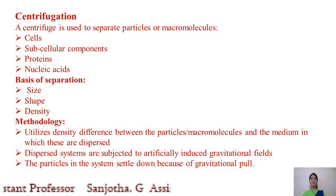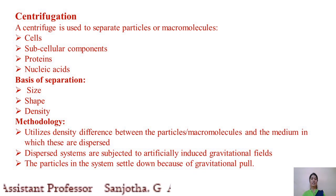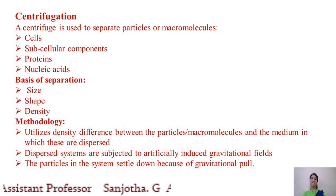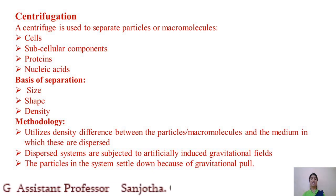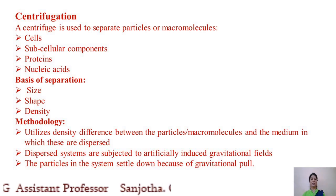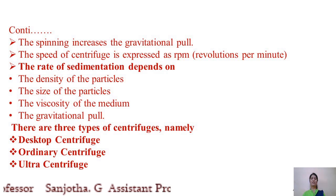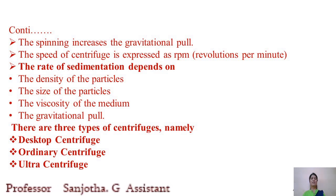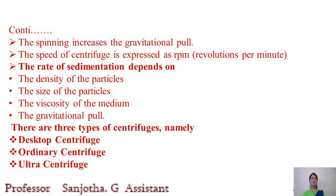We will now look at the methodology involved in centrifugation. Centrifugation utilizes density differences between particles or macromolecules and the medium in which they are dispersed. The dispersed systems are subjected to artificially induced gravitational fields, causing particles to settle. As rotor speed increases, the gravitational pull also increases. The speed of centrifugation is expressed as RPM — revolutions per minute.